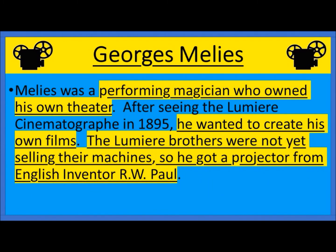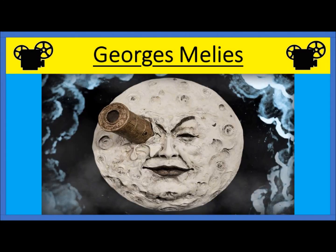Georges Méliès was a performing magician who owned his own theater and wanted to create his own films. The Lumière brothers weren't selling their machines at that point, so he got a projector from the English inventor R.W. Paul. Méliès created over 500 films in his lifetime. One of his most famous, shown in the rendering here, is A Trip to the Moon.